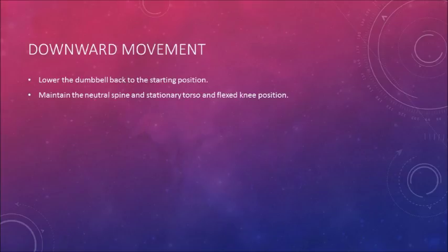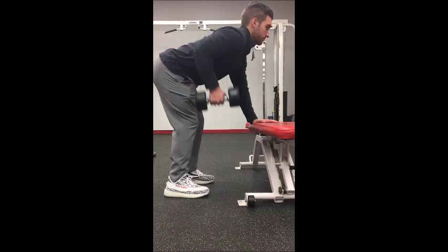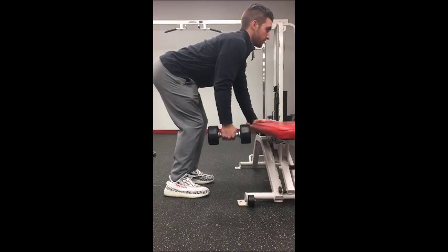Make sure to lower the dumbbell back to the starting position while maintaining a neutral spine and stationary torso with flexed knees. I have provided a video of Taylor doing the downward movement.